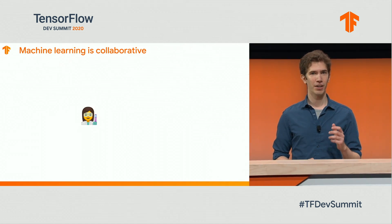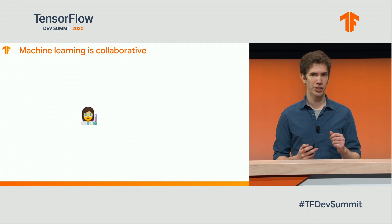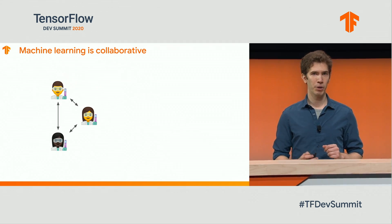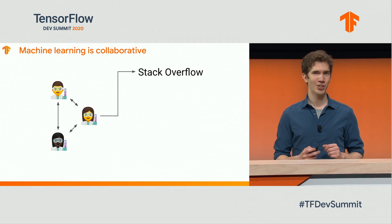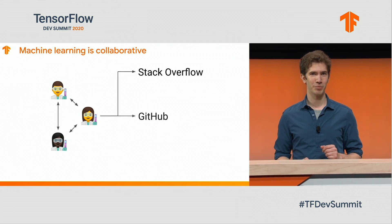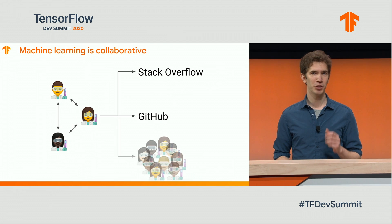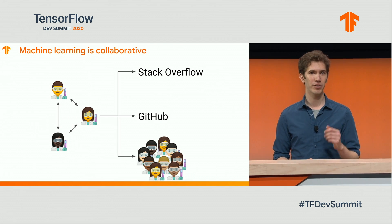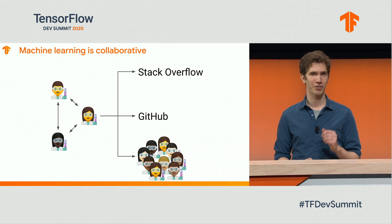Machine learning often involves collaboration, where you exchange ideas with the team, post questions on Stack Overflow, share your code on GitHub, and publish your findings to the broader research community through papers and conferences.